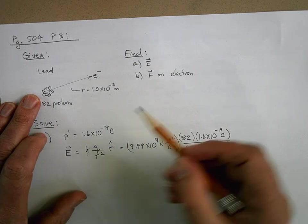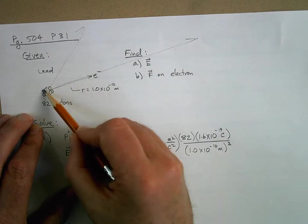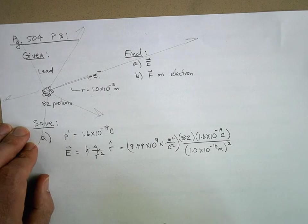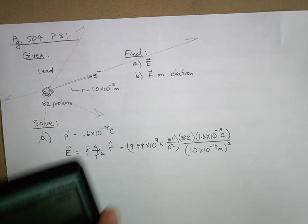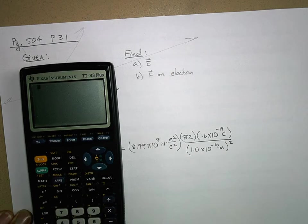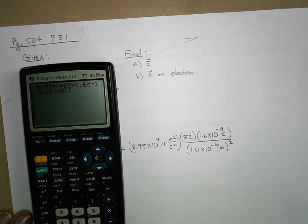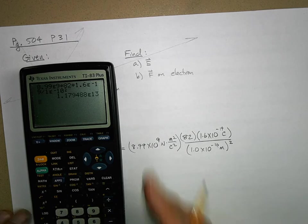The r hat direction just means away. So the electric field, because these are positive charges in this nucleus, the electric field is going to be away from the nucleus in all directions like that. Now we just need to plug in our values. Let's do that on the calculator. We've got 8.99 times 10 to the 9 times 82 times 1.6 times 10 to the negative 19, and then divided by 1 times 10 to the negative 10, but I have to square that.